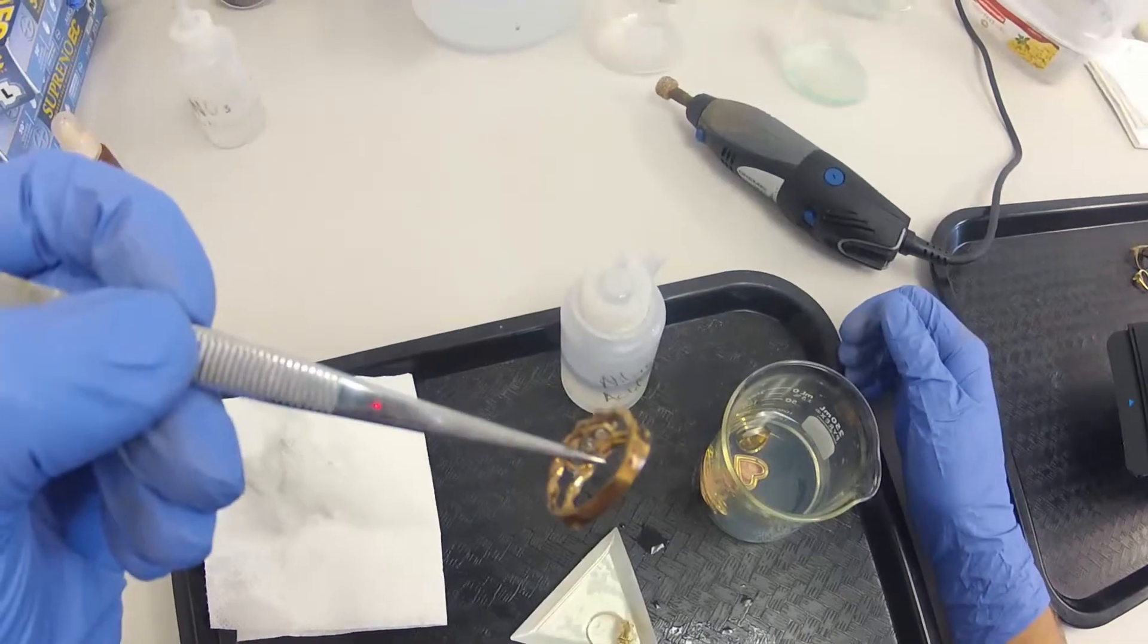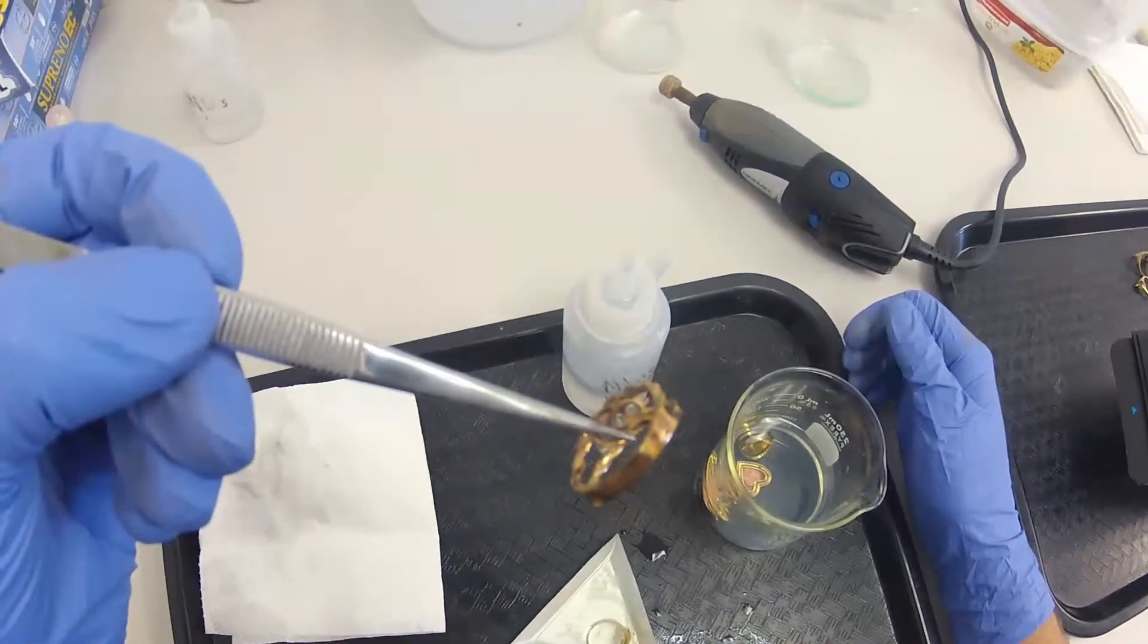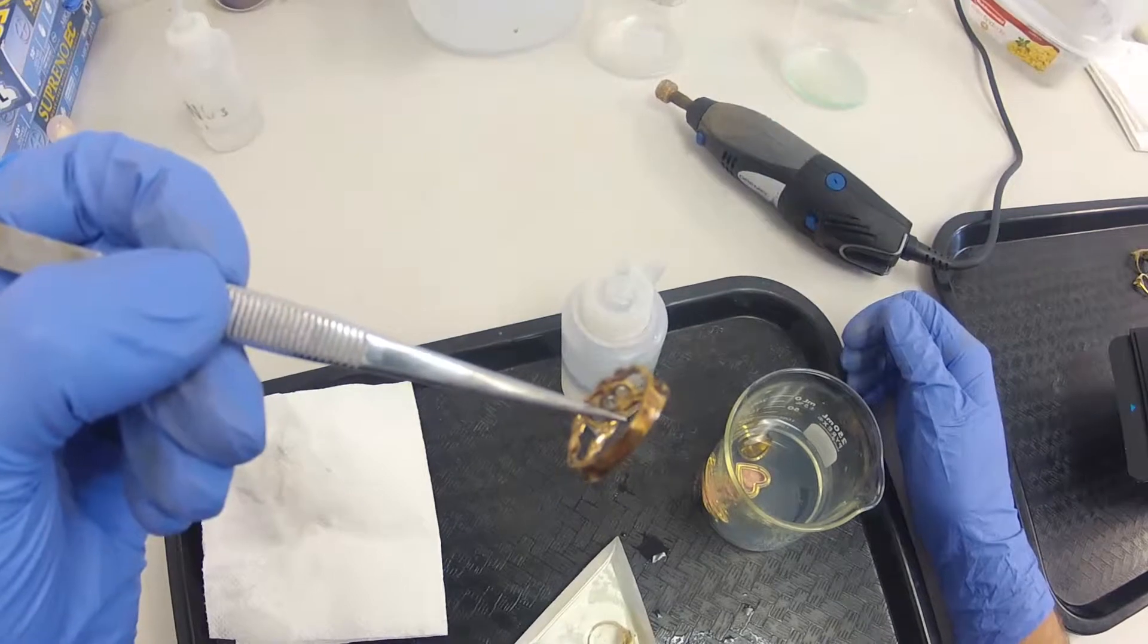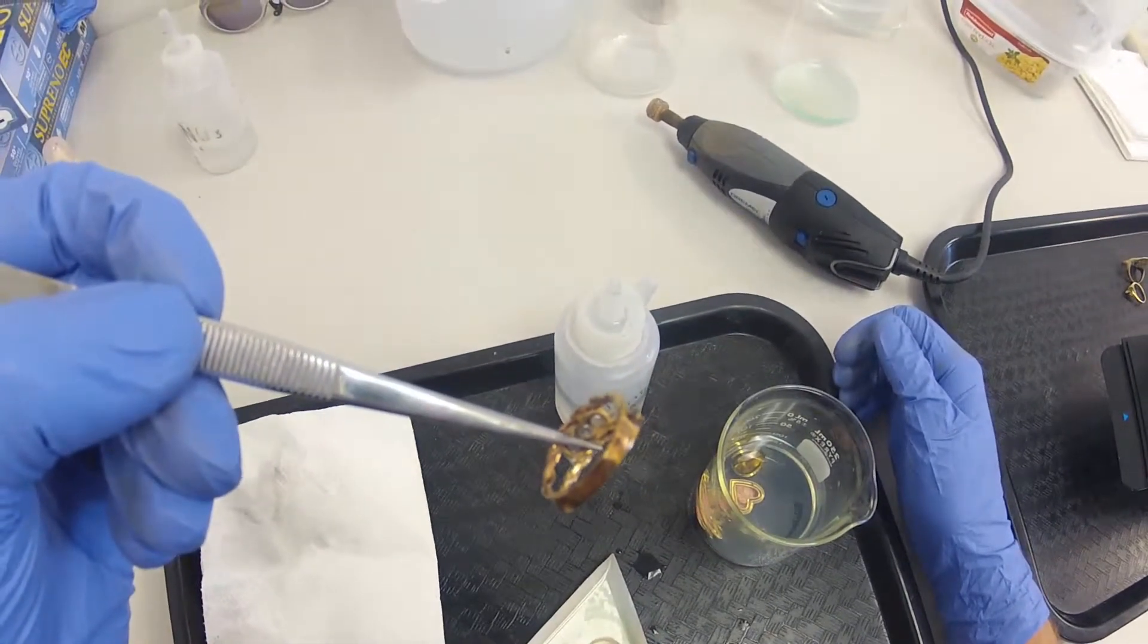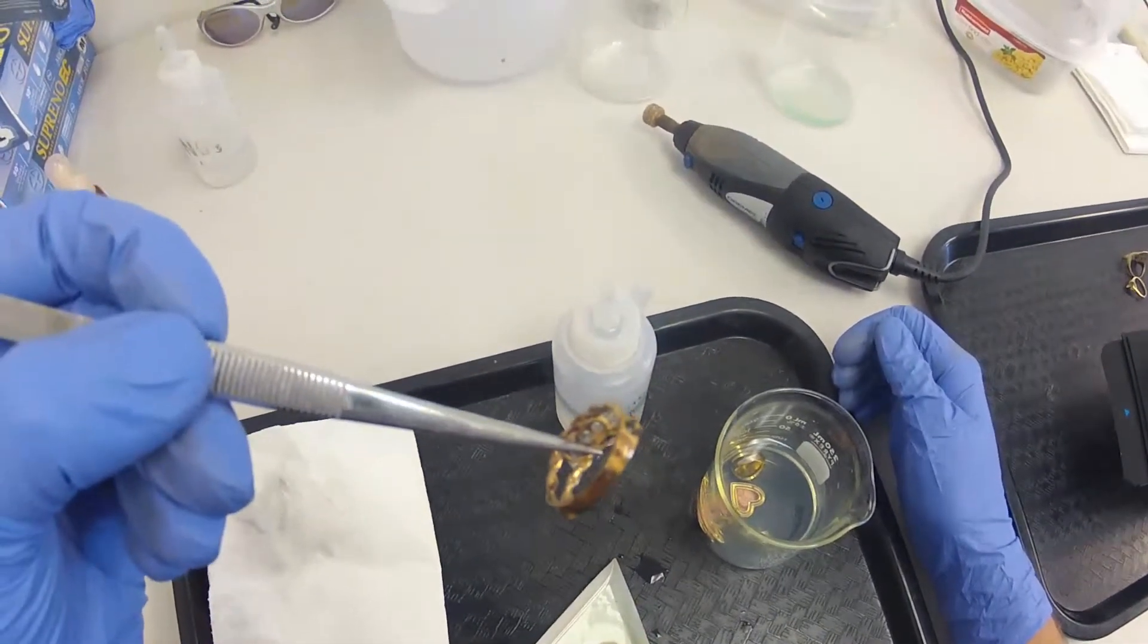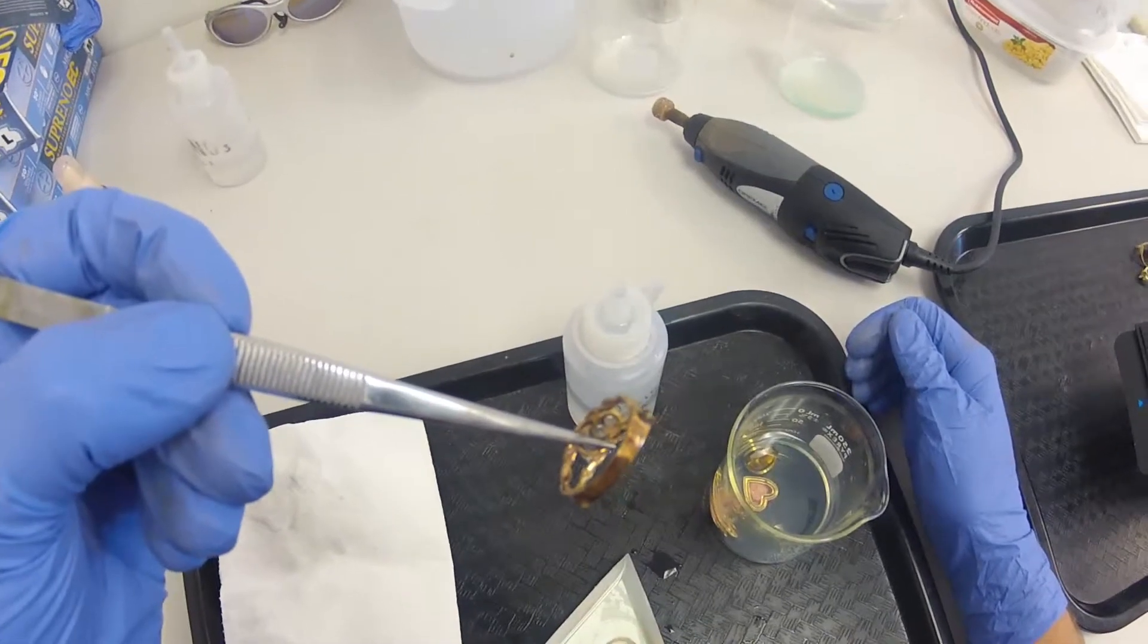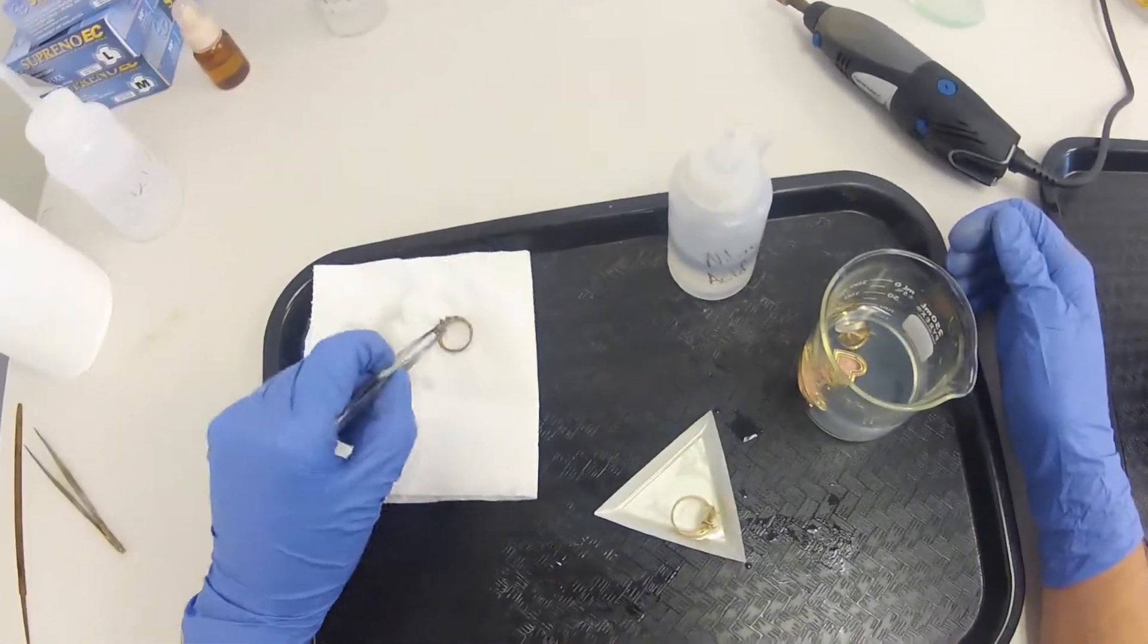You can see how it's a real dark color. And that's because the acid has started eating away at the base metal that's alloyed with the gold, resulting in that dark brownish color there. So that's how we know that's 10 karat.